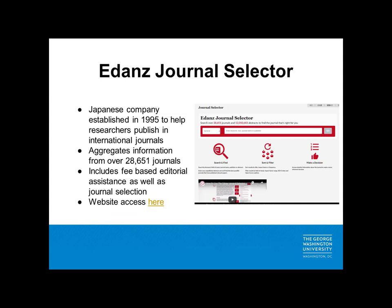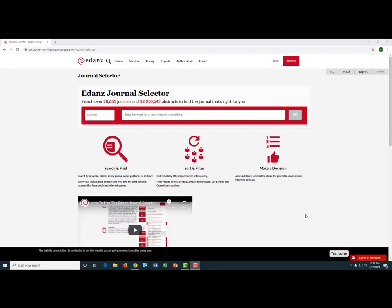The next resource I want to mention is the Edans Journal Selector. This tool was created with the goal of helping researchers publish in international journals and currently aggregates information from over 28,000 journals. One advantage is that it shows a journal's impact factor in an easy-to-read format — a journal such as The Lancet, for example, is designated as having an impact factor that is 'very high.' In addition to offering free information about journals, Edans also offers fee-based editorial assistance. Edans is a free web-based tool that can be accessed at en-author-services.edansgroup.com/journal-selector.